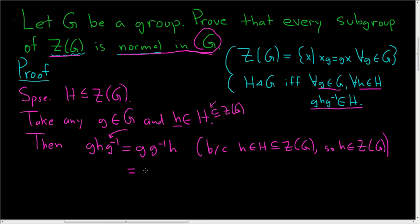And then gg inverse, that's the identity element. So we get eh. And e times h is just little h, and this is certainly in H.